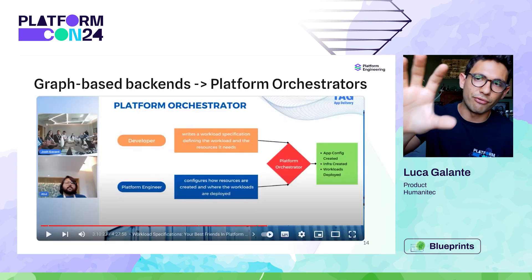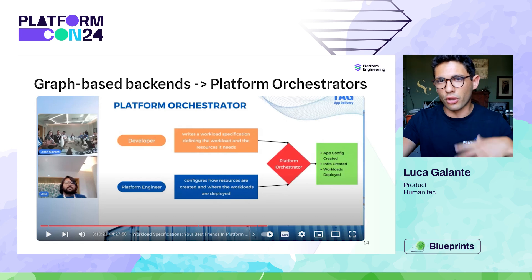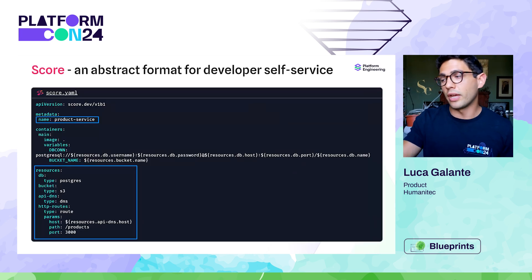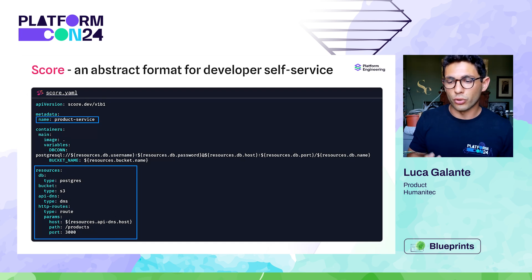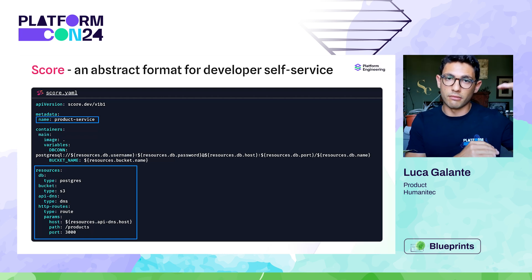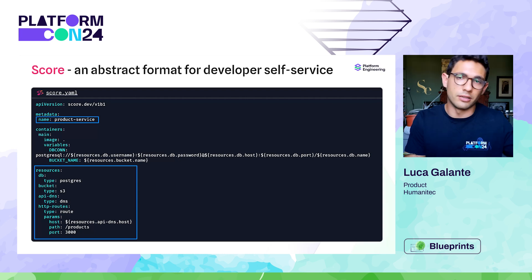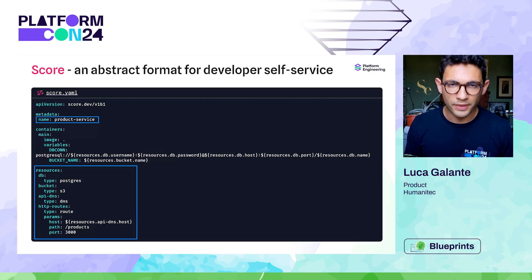Breaking that down: developers are requesting infrastructure — that's really where the complex logic comes in. They can do that through a portal like Backstage, a UI, a CLI, or an API. A good orchestration system provides different interfaces that the platform team can offer to developers, depending on the right level of abstraction and context. We'll look at Score because it's an open-source workload specification — a code-based interface.